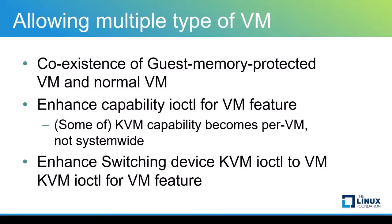Another consideration on the KVM side is to allow multiple types of VMs. Cloud operators will expect both guest memory-protected VMs and normal VMs to co-exist. Protected VMs can have different capabilities from normal VMs, so KVM capability ioctls need to be per-VM, not device-wide, because such capability is not system-wide. The same changes are needed for QEMU to use VM ioctls instead of KVM device ioctls.